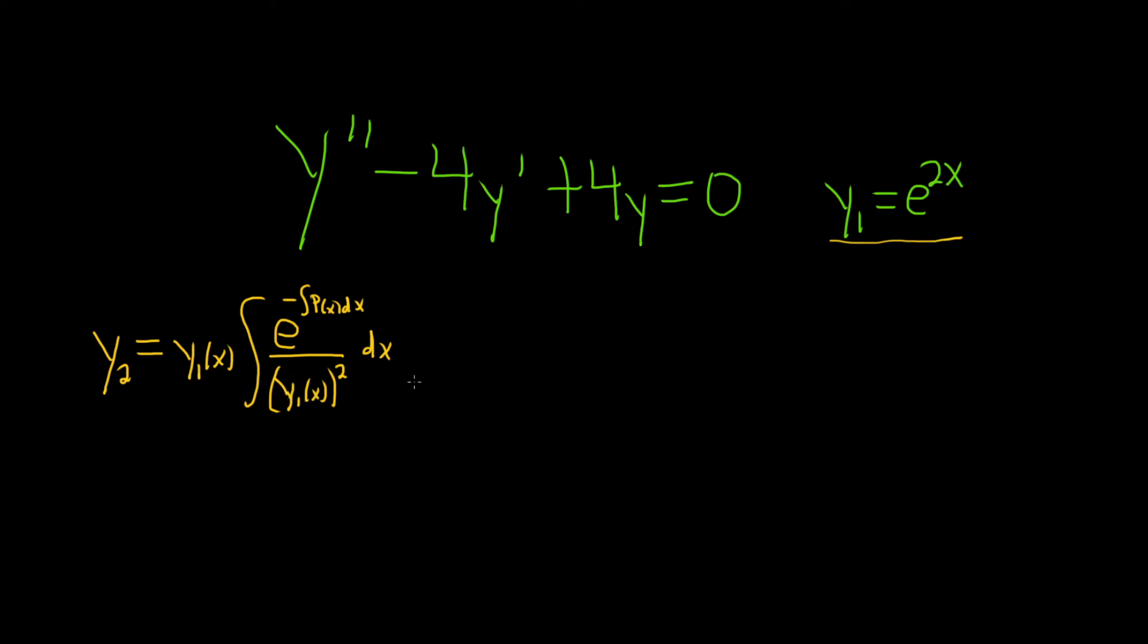Alright, so let's go ahead and work this out. This would be equal to e to the 2x times the indefinite integral. So here we're going to have e to the integral of, well what's big p? Big p is this right here, that's your big p. Just got to make sure there's a 1 here, okay? So if there's like a 3 here, you have to divide by it, so it has to be in standard form.